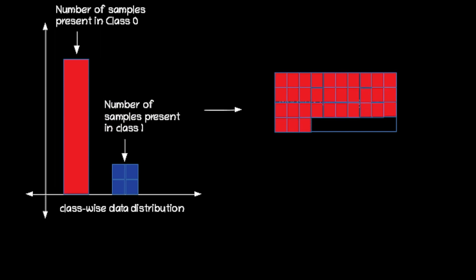In our model, we have a lot more red boxes than blue boxes. The red boxes cover most of the model while the blue boxes are relatively very few. This means our model has been exposed to a lot more examples from the red class than the blue class. Because the model has seen mostly the red boxes, it might favor making predictions based on the red class. This can make it less accurate when dealing with blue class examples, because it doesn't have much exposure to those examples.